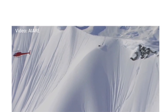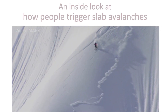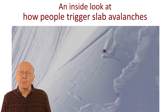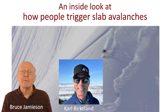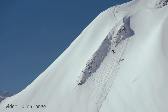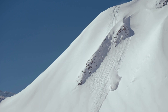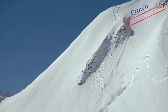When someone triggers a slab avalanche, what is going on inside the snowpack? To get a current understanding of the process inside the snowpack, I teamed up with avalanche scientist Carl Berkland and Ron Semenhuis. In this clip, the crown fracture appears upslope of the rider. To see the connection between the rider and the crown fracture, let's look inside the snowpack with an animation.